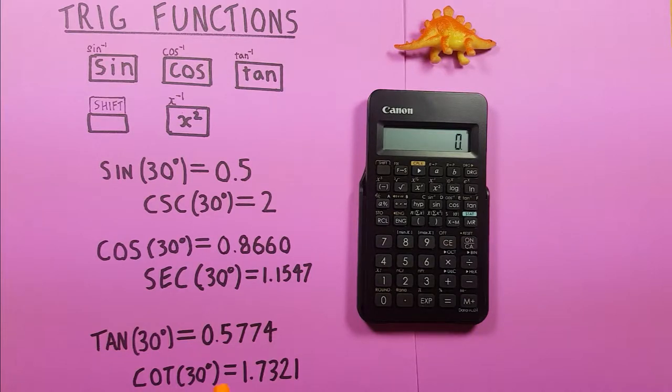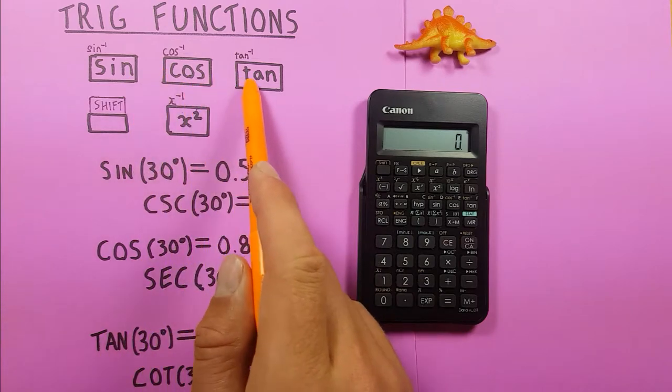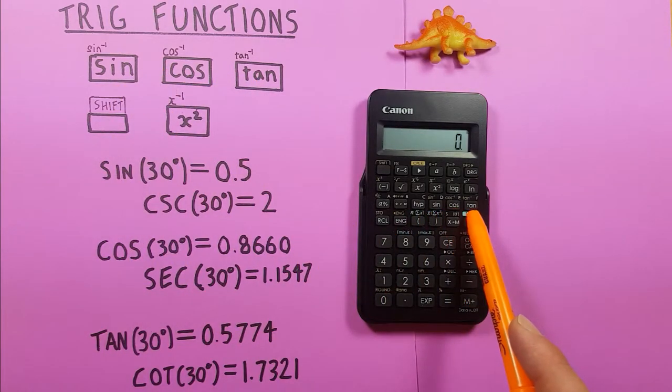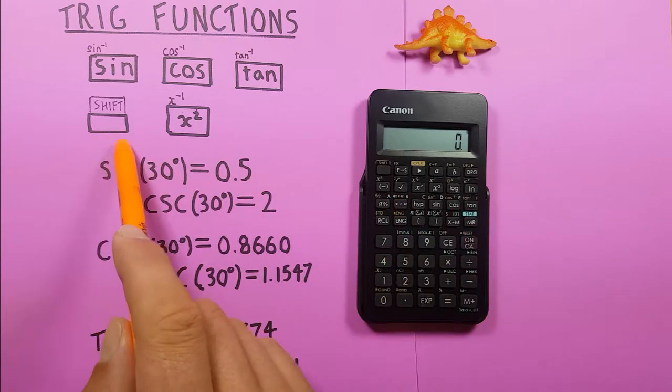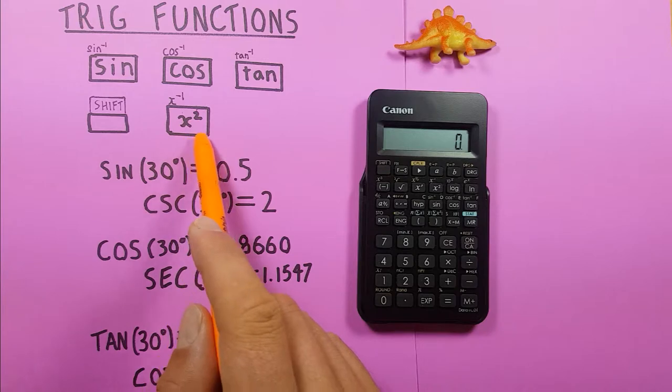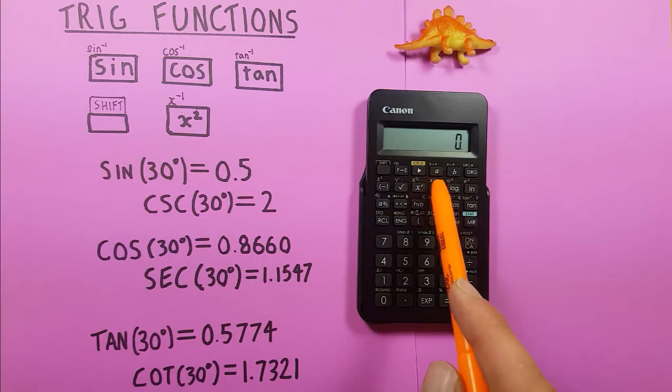To do this we'll be using the sine, cos and tan keys located here as well as the shift key located here in the top left and the x squared key located here.